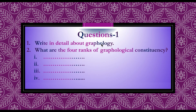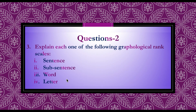For exam questions: Question one — write in detail about graphology, covering all three definition points. Question two — what are the four ranks of graphological constituency? The answers are: sentence, sub-sentence, word, and letter. Also be prepared to explain each rank scale individually, as any of the four may be asked in the examination.